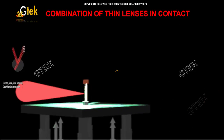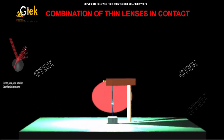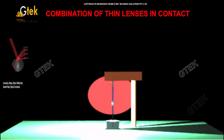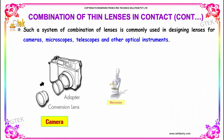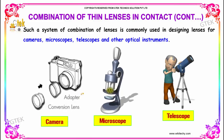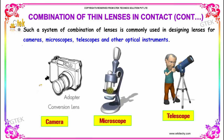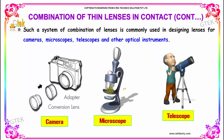You can see the 3D view of the system depicting the combination of thin lenses in contact. Such a system of combination of lenses is commonly used in designing lenses for cameras, microscopes, telescopes, and other optical instruments.